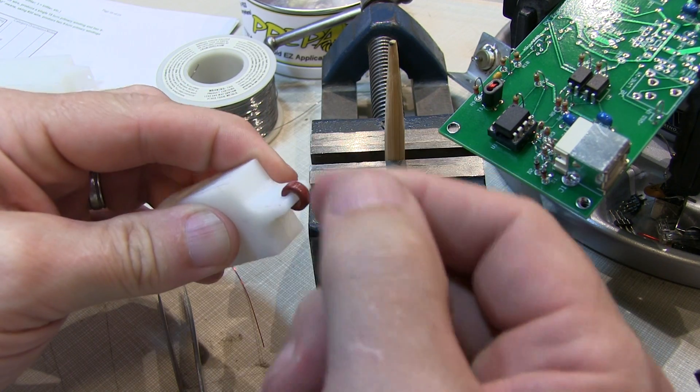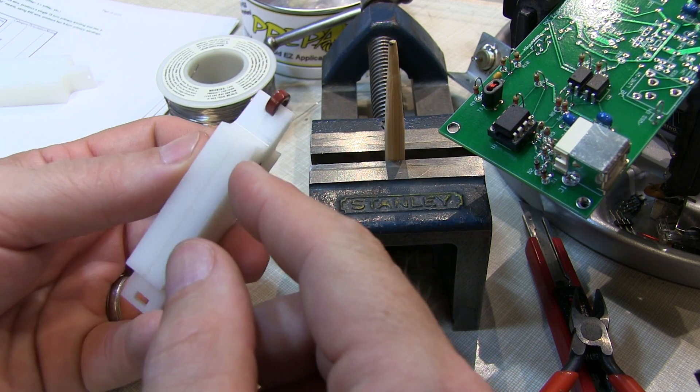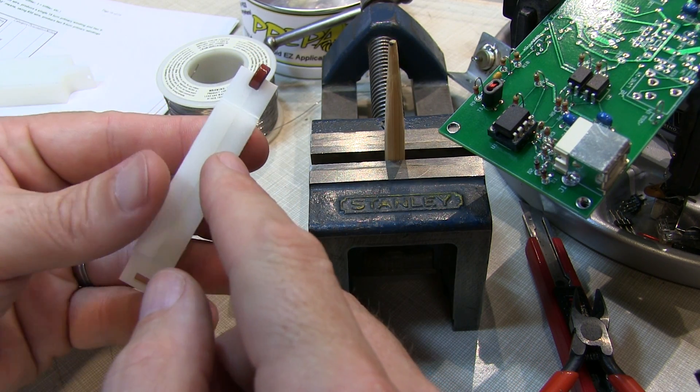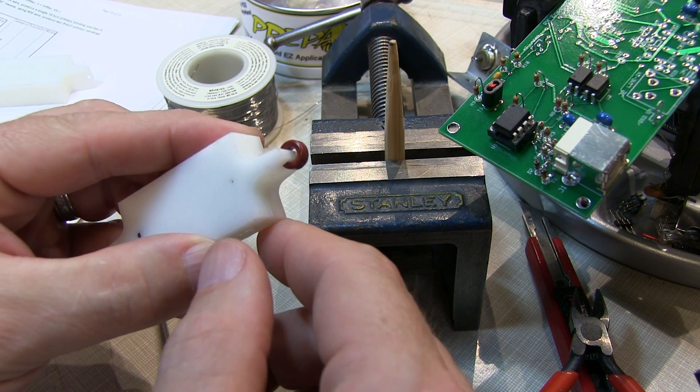And you can put that into a vise and then use that kind of hands free to wind the core. And I haven't really used these yet, because I've been using a different method for winding cores and I'll show you that.